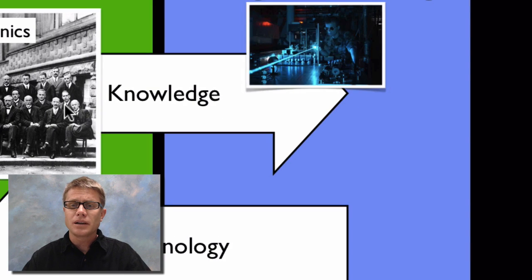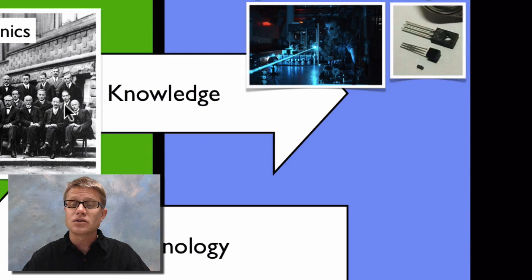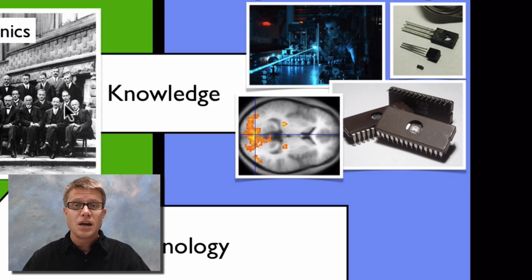What did that lead to? Well that led to things like lasers, transistors, microchips, MRI, functional MRI. And so it's created all of this technology. And we couldn't have got that technology without a fundamental understanding of how electrons work.